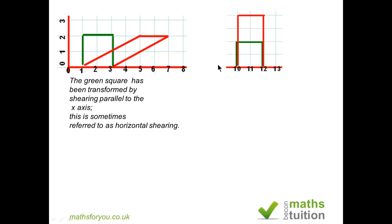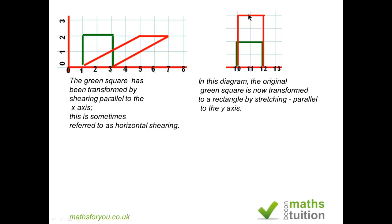On the other hand, we have a transformation by stretch, and this is perpendicular to the x-axis, or the line y equals zero, or parallel to the y-axis. Again, the coordinates of the objects on the invariant line do coincide with, and have the same value as, the coordinates of the part of the image on the invariant line that hasn't moved at all. This is transformation by stretch.